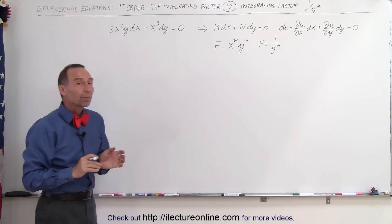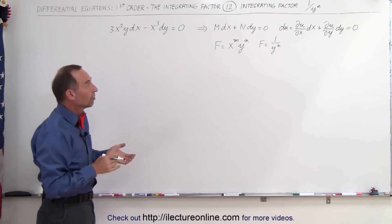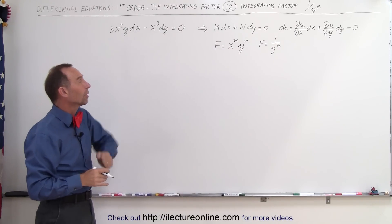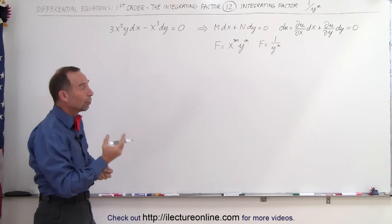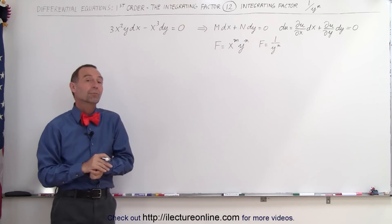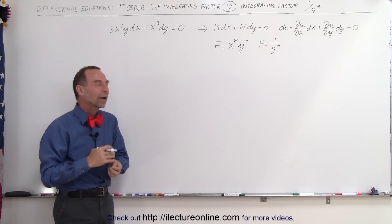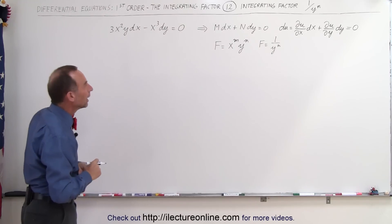So what we're going to do is simply say let's assume that it's something simple like that, and later on we'll try maybe 1 over x to the n, or maybe 1 over x to the n, y to the n.